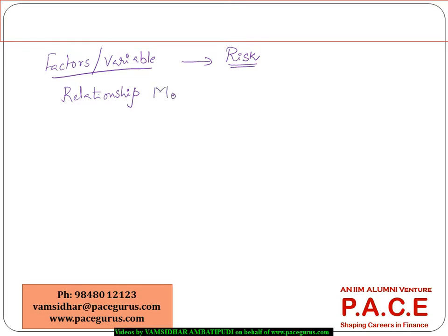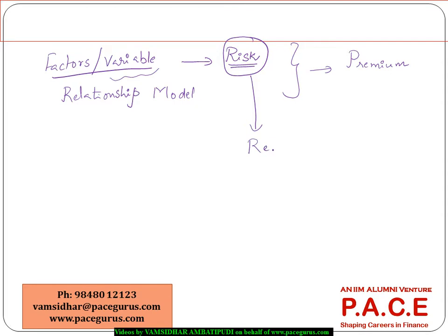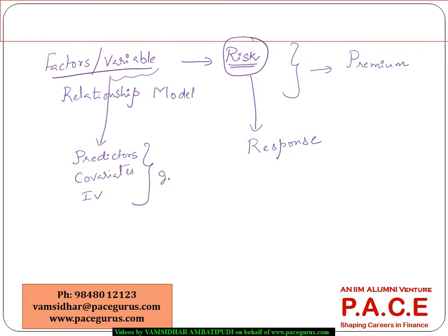It comes out with a proper relationship model between all these predictor variables and the outcome which I want to predict. In the insurance world, once I am able to do this properly, proper premium pricing and product pricing can quite comfortably be done. This variable which I am predicting is called my response variable, and all the various factors and variables used for predicting the response variable are called predictors, covariates, or independent variables.